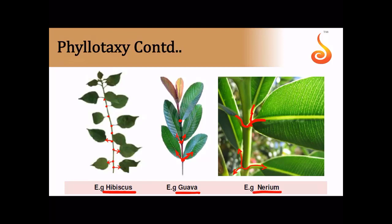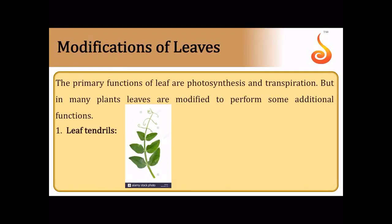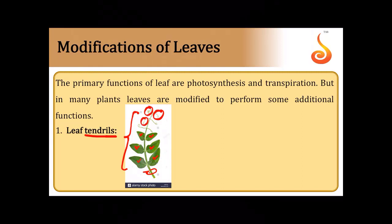Now for leaf modifications. In sweet pea (Pisum sativum), the leaf is pinnately compound with a rachis and leaflets on either side. Some of the apical leaflets get modified into coiled structures called leaf tendrils. In cactus, the sharp pointed structures are actually leaves modified into leaf spines — they are not thorns, as they lack a woody core. Leaves are modified into spines in cactus to reduce transpiration, since it lives in desert conditions.